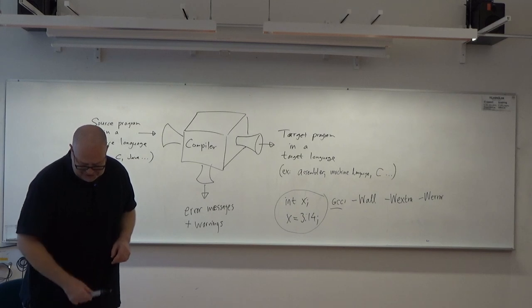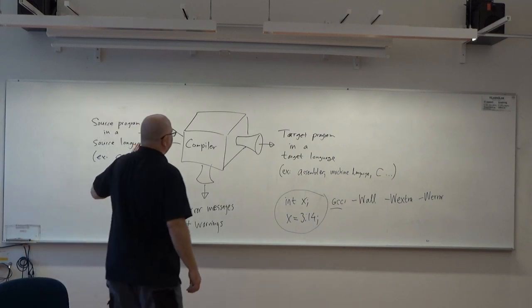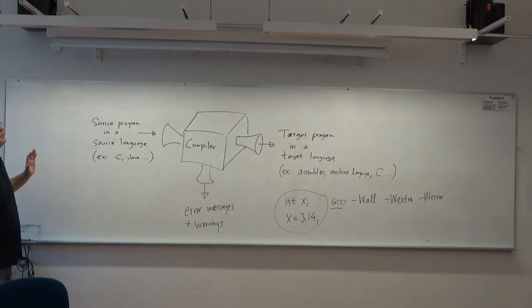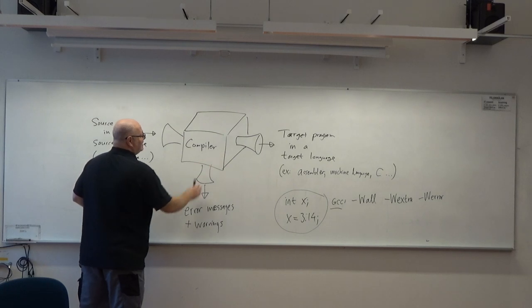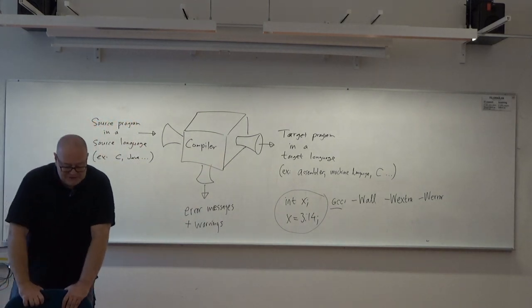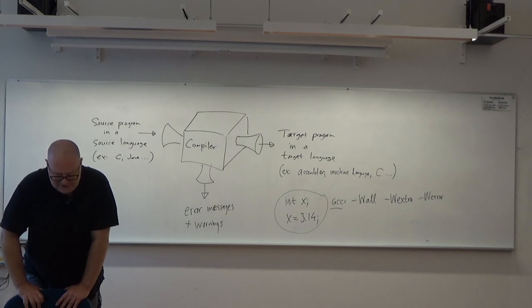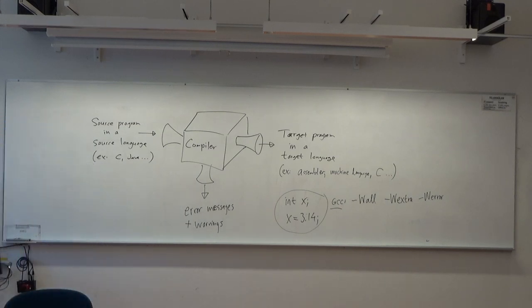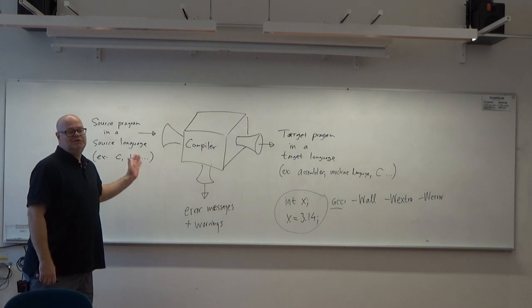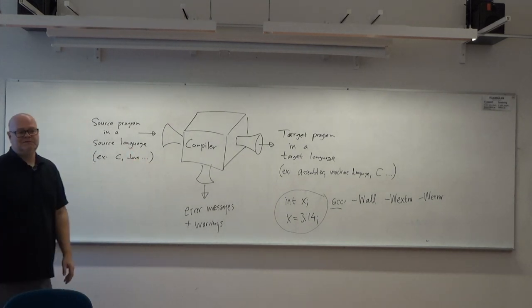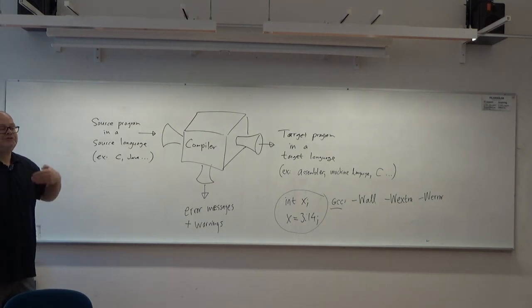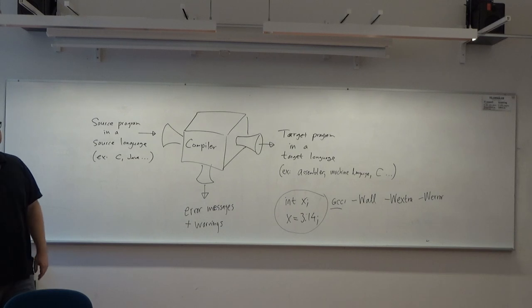One interesting point is that over the years we have learned how to split the compiler into parts and which techniques to use. The first-ever compiler, a Fortran compiler from the 1950s, took 18 staff years to develop. Now we can build a similar compiler as a student project in a few months. So we have learned which techniques to use when building compilers.